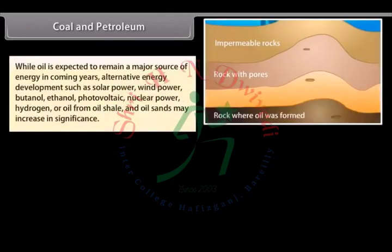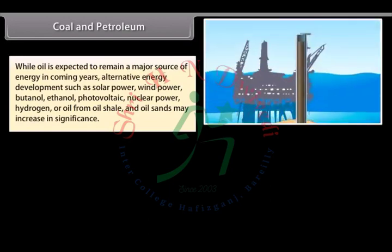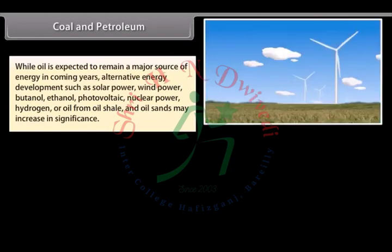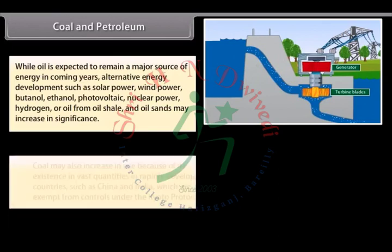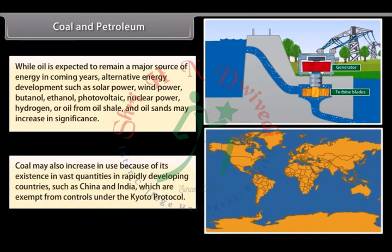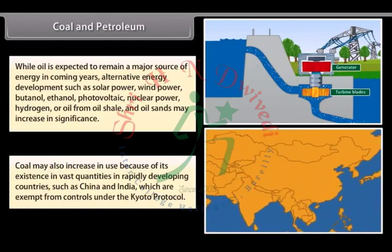While oil is expected to remain a major source of energy in coming years, alternative energy development such as solar power, wind power, butanol, ethanol, photovoltaic, nuclear power, hydrogen, or oil from oil shale and oil sands may increase in significance. Coal may also increase in use because of its vast quantities in rapidly developing countries such as China and India, which are exempt from controls under the Kyoto Protocol.